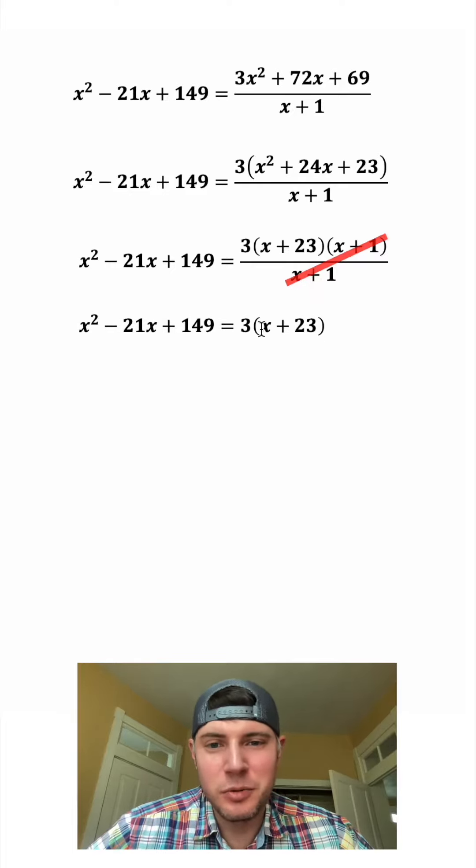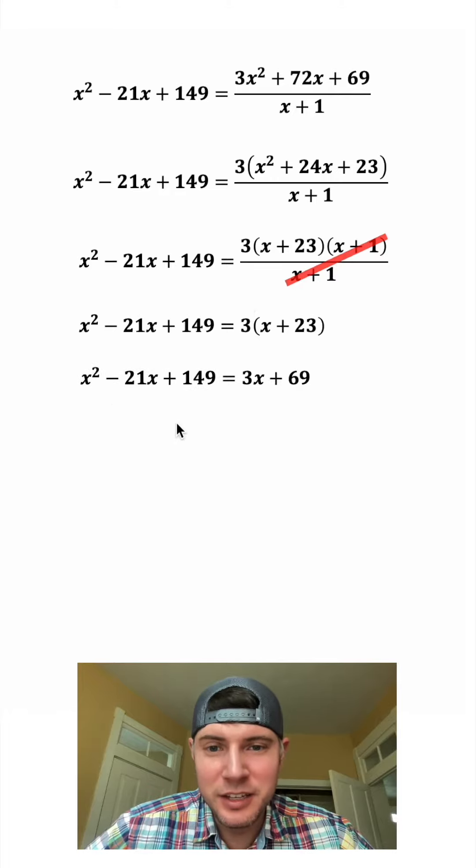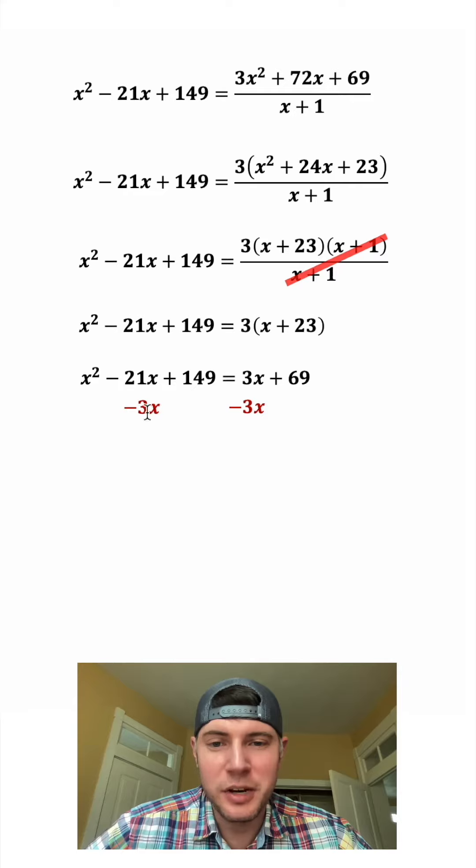And now let's distribute this 3. We have 3 times x, which is 3x, and 3 times 23, which is 69. Now let's set everything equal to 0. We'll subtract 3x from both sides and subtract 69 from both sides.